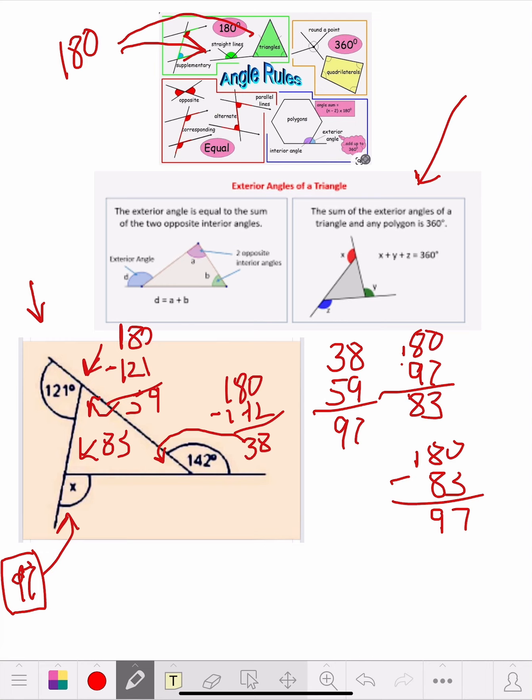So that means angle x, the outside ones. So you could call this one outside one, this another outside one, and this another outside one. So you know they're all going to be 360. So let's just add up 142, 121. 142, 121. Real quick.